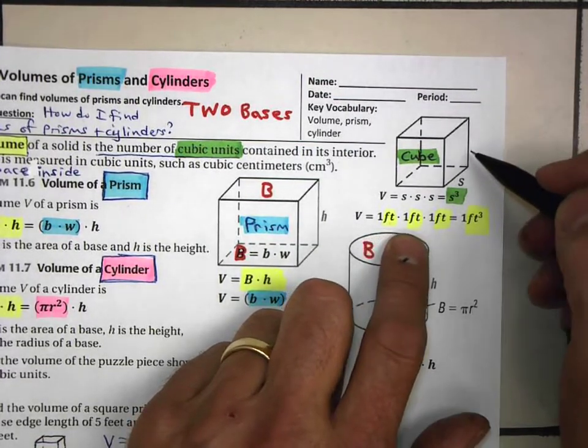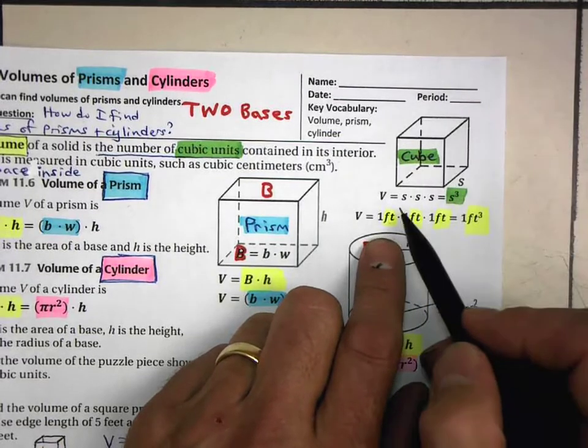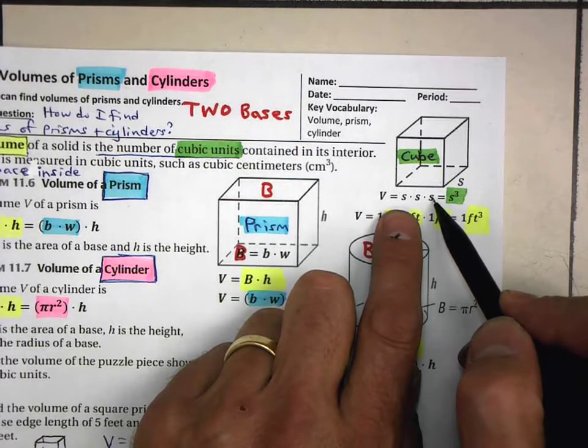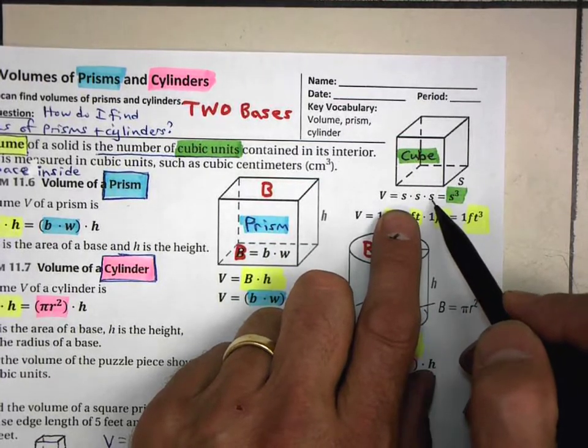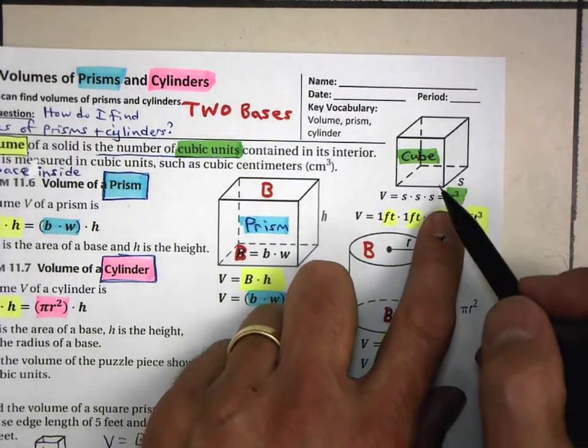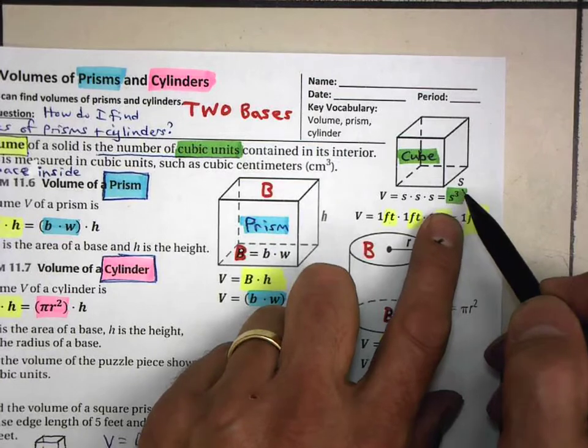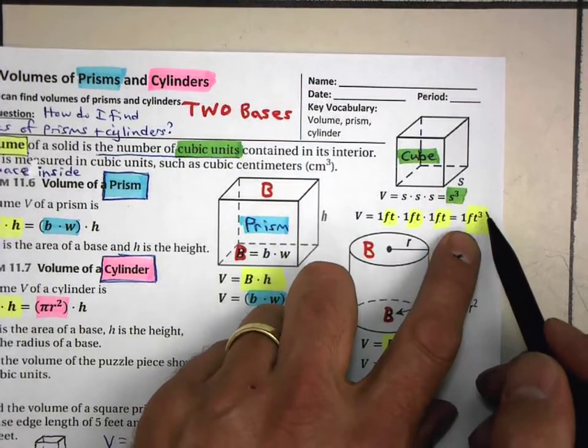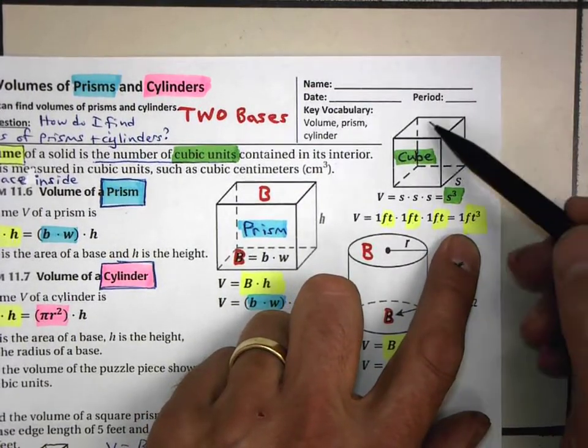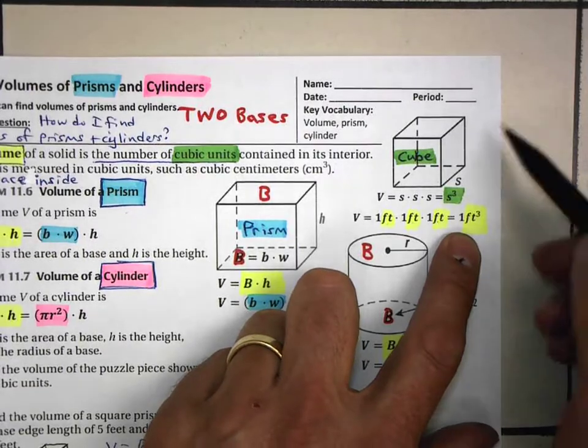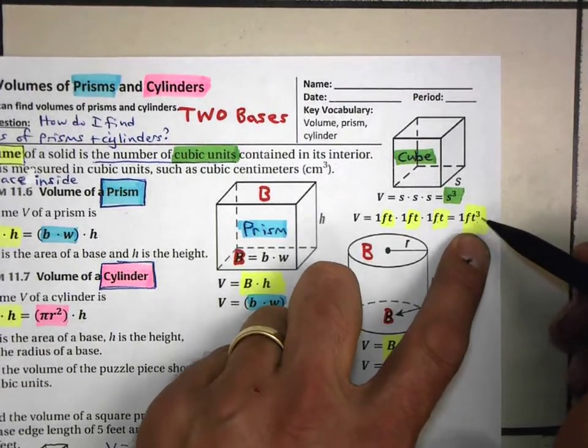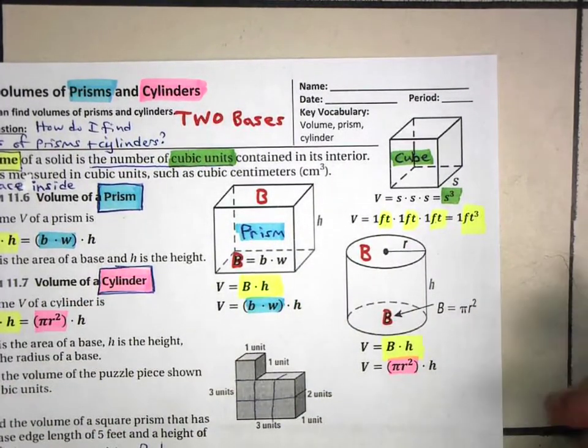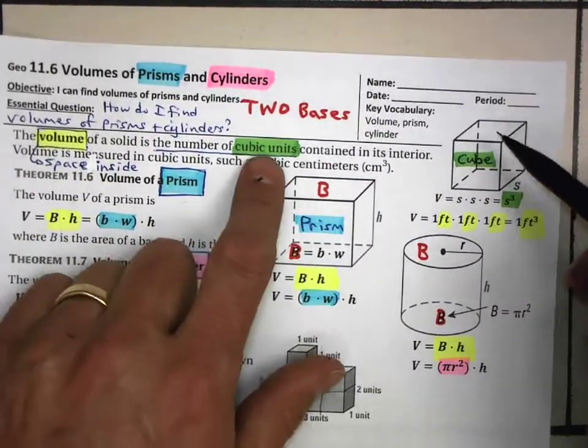Then, to find the volume, we would take the side length times the side length times the side length. In other words, base times width times height, that sort of thing. Which, in other words, in a cube, they are all the same length. So that would be s cubed. So one foot times one foot times one foot would give us one foot cubed. So this is a cube whose volume is one cubic foot. I said squared, didn't I? One foot cubed. Okay, so when we are measuring volume, we're talking about cubic units.